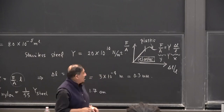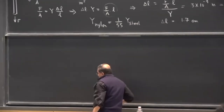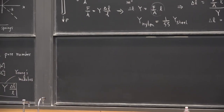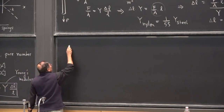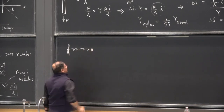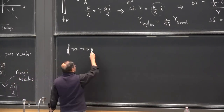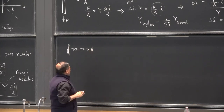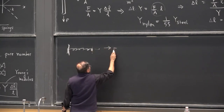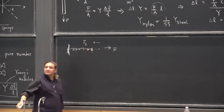Now let me go back to springs and set up the physics of oscillation. Suppose this is my spring — let's imagine there is a tiny mass here, because the spring is massless. Suppose that I give it a stretch — I take it to this point by applying a force. The spring will give me a restoring force, which we call Fs. Restoring force — don't forget this name.